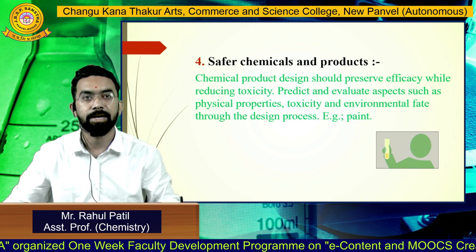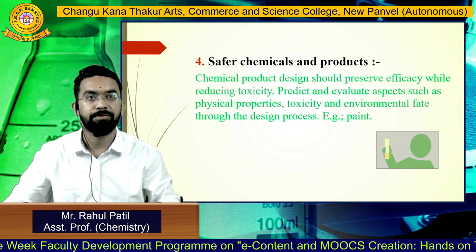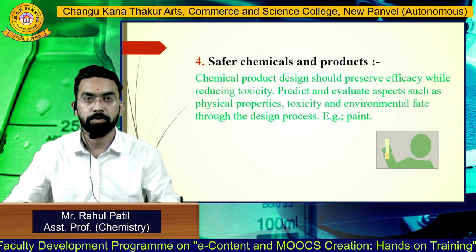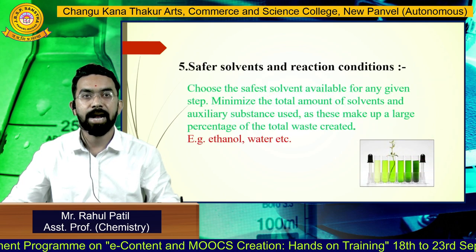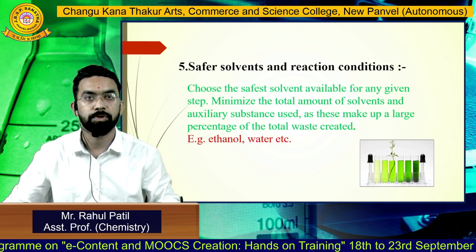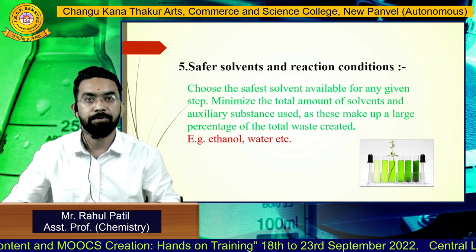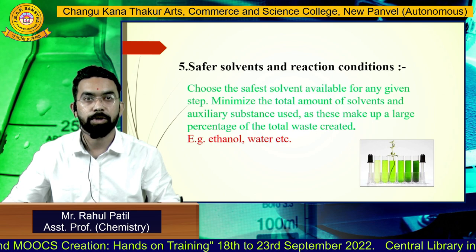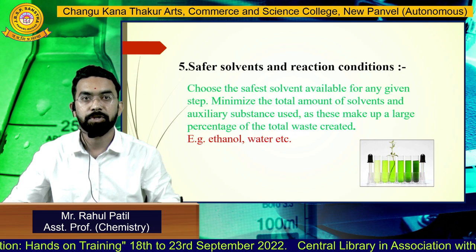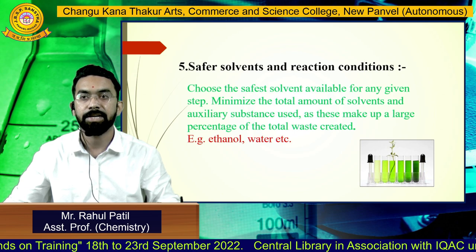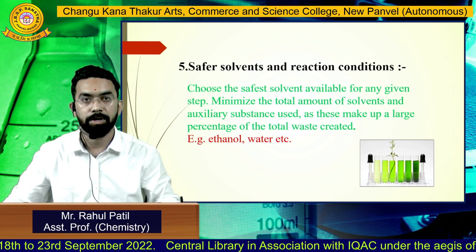Principle 4: Safer Chemicals and Products. Chemical product design should preserve efficacy while reducing toxicity. Principle 5: Safer Solvents and Reaction Conditions. Choose the safest solvent available for any given step and minimize the total amount of that solvent. Auxiliary substances should be made unnecessary whenever possible. Examples include ethanol, water, etc.